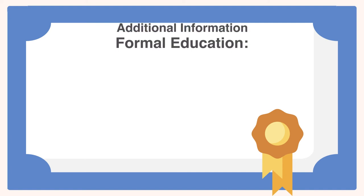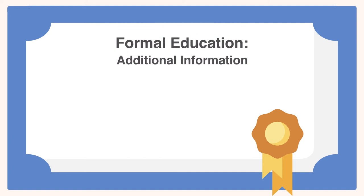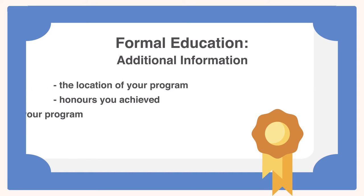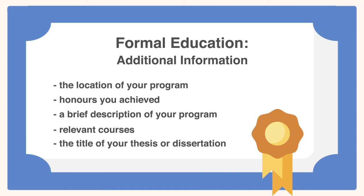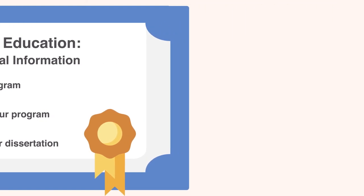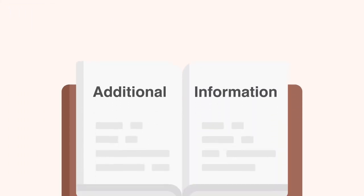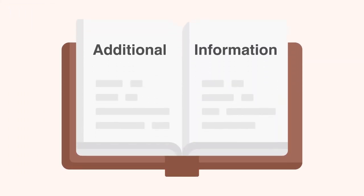That being said, there is additional information you can include if you think it is significant. You can decide to list the location of your program, honors you achieved, a brief description of your program, relevant courses, or if you're listing graduate level education, you can include the title of your thesis or dissertation as well. Many of these entries are optional. Listing all of them like ingredients for a recipe might make the portfolio look a bit cluttered. It's going to be up to you to decide which ones are relevant for the job you're applying to.